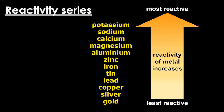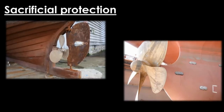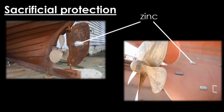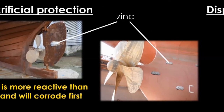From the reactivity series we can determine meaningful applications. The first is sacrificial protection. As you can see in the diagrams, there are silver-looking blocks of zinc metal included within ship structures. These protect the iron alloy against corrosion because zinc is more reactive than iron, so it corrodes first in place of iron.